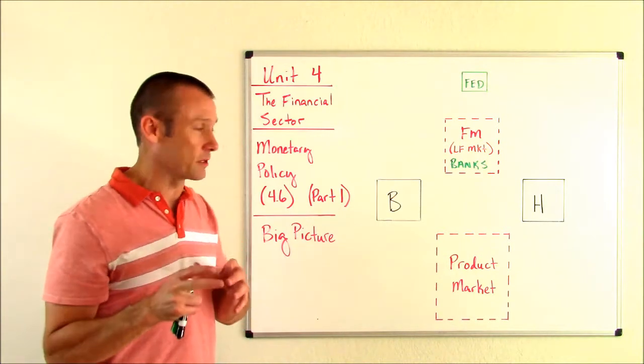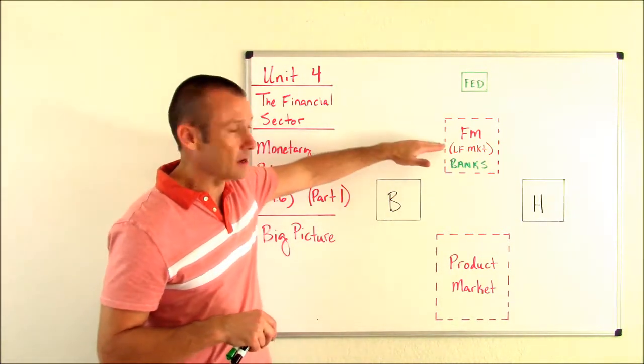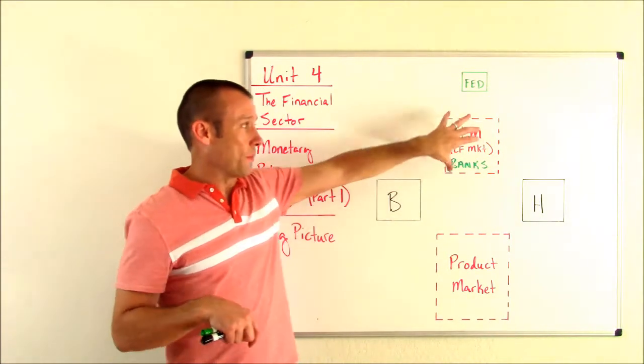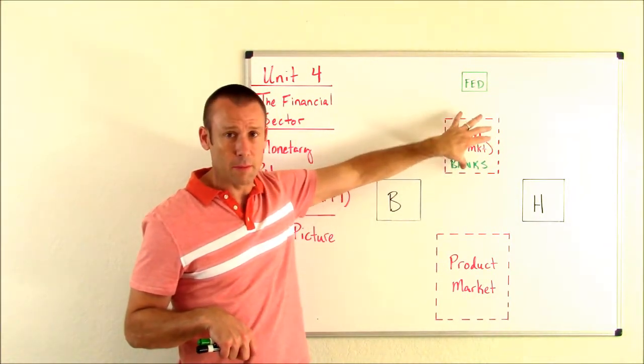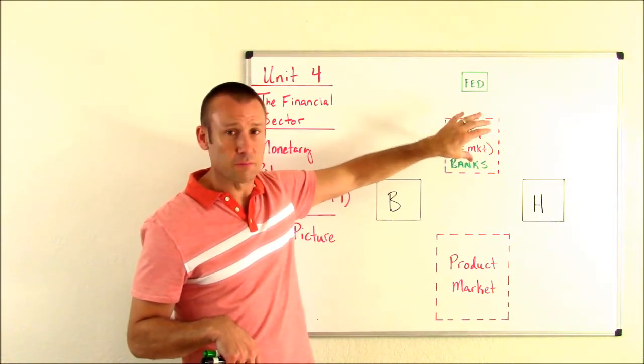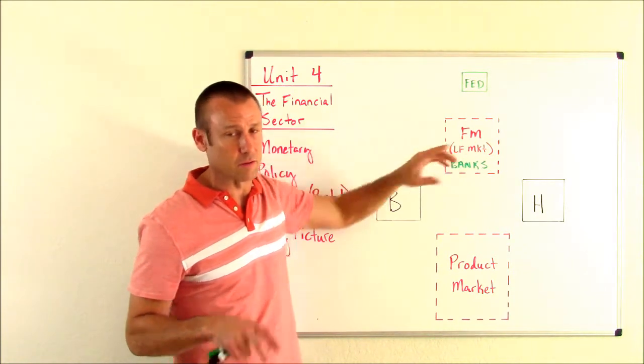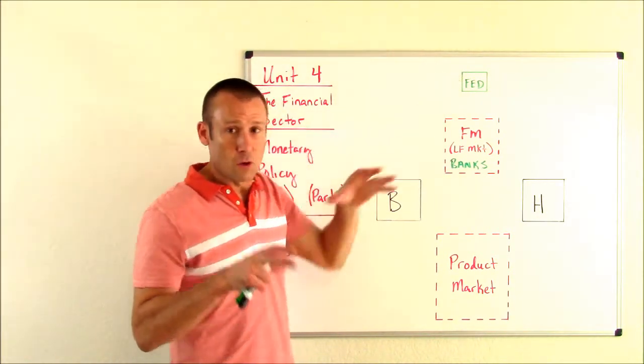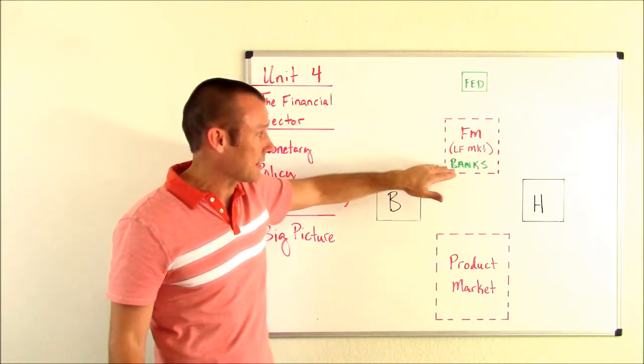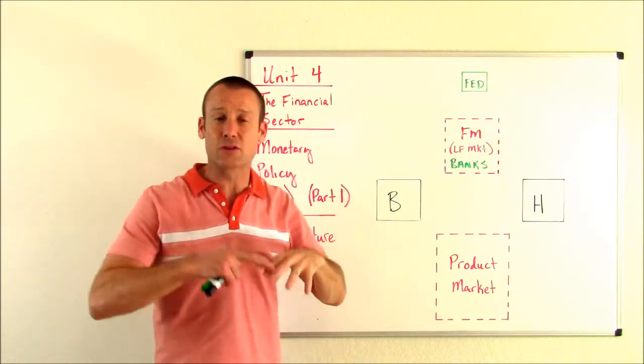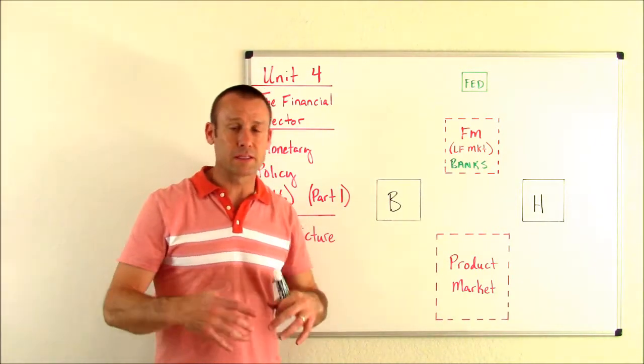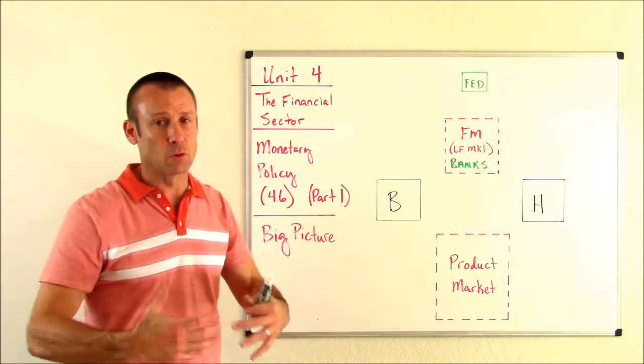But one of the major things it does is controls the money supply in the economy. The way that it controls the money supply in the economy is via this financial market, i.e. the loanable funds market. What this thing is often called by people who talk about monetary policy, by teachers and professors of monetary policy is the transmission mechanism. So the Fed wants to change the amount of money in the economy. They're going to work through this market, i.e. banks. They're going to work through banks to either increase the money supply or decrease the money supply. With all that said, let's get to some actual monetary policy.